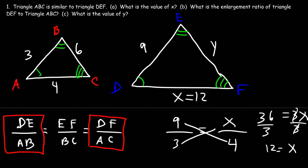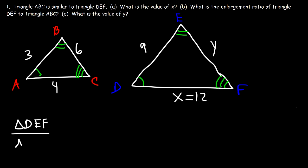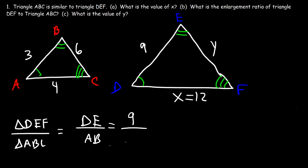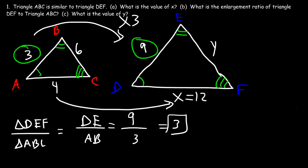Now let's move on to part B: what is the enlargement ratio of triangle DEF to ABC? We take the ratio DE to AB, which is 9 to 3. This tells us that the side lengths of DEF are 3 times bigger than ABC. To go from AB to DE, we multiply by 3.